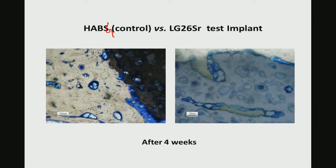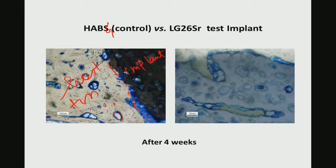For the hydroxyapatite bioglass composition, you can see the cells, the host tissue, and the implant part in the cross-section image under the optical microscope. Here you can see a very continuous implant interface and certain cellular features in the host tissue around the implant.